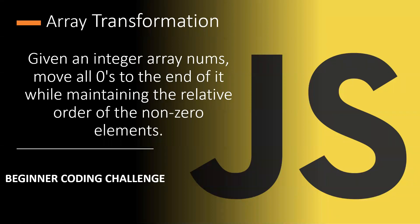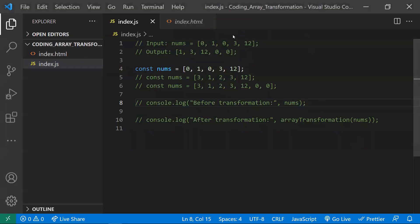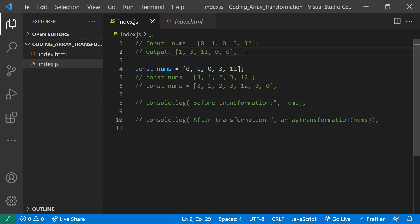In this video, let's learn about a coding challenge for beginners. We have an array and we need to move all the zeros to the end of the array while the remaining non-zero elements maintain their relative order. For example, given the input 0 1 0 3 12, the output should be 1 3 12 with the zeros moved to the end. These are array transformation problems.